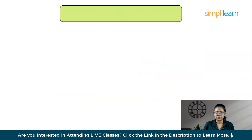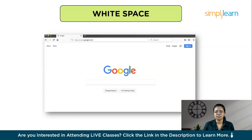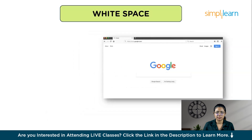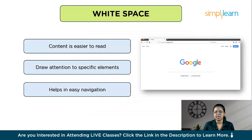Another important aspect is white space, also known as negative space. It refers to the empty spaces around and between the elements of your design. For example, Google's homepage uses a lot of white space, making the search bar its focal point. White space makes content easier to read and understand, and can draw attention to specific elements — for example, surrounding a call-to-action button with white space makes it stand out more. White space also helps users navigate a website or app more easily by separating different sections and making the layout more intuitive.